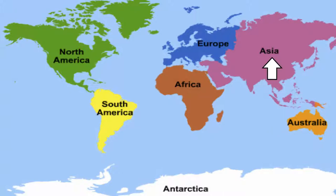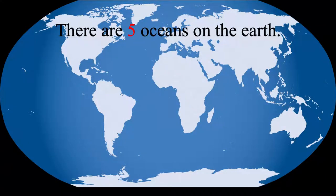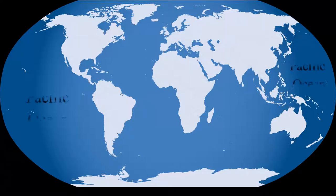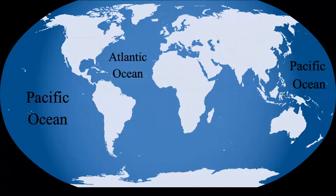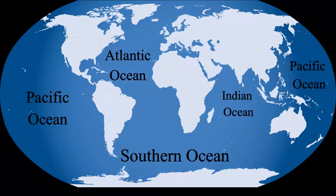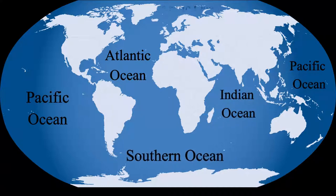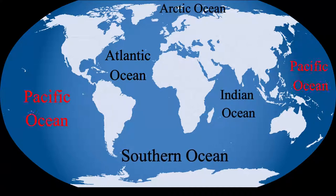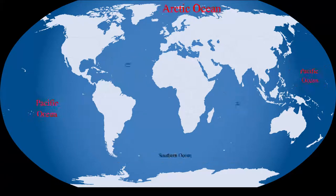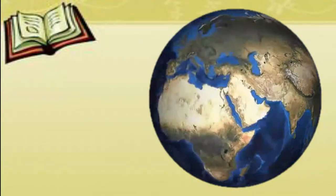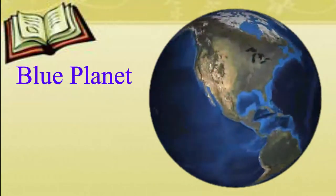Asia is the largest continent in the world. There are five oceans on the earth: the Pacific Ocean, the Atlantic Ocean, the Indian Ocean, the Southern Ocean, and the Arctic Ocean. The Pacific Ocean is the largest and the deepest ocean in the world, and the Arctic Ocean is the world's smallest ocean.